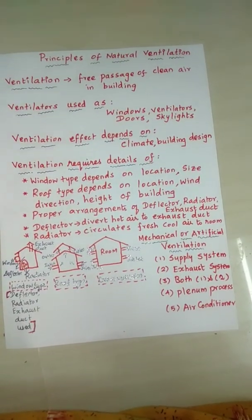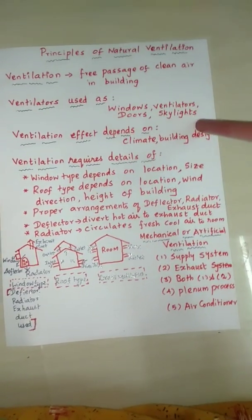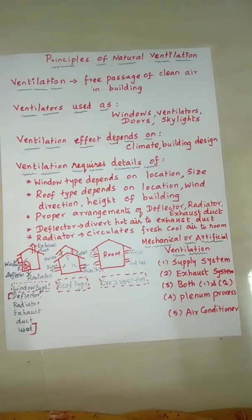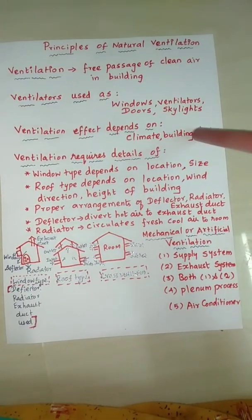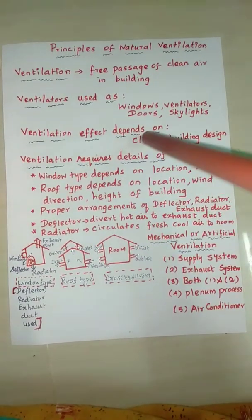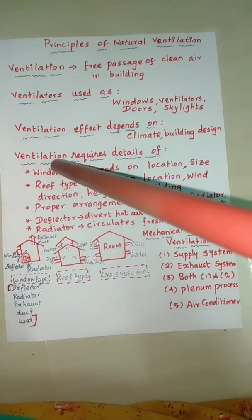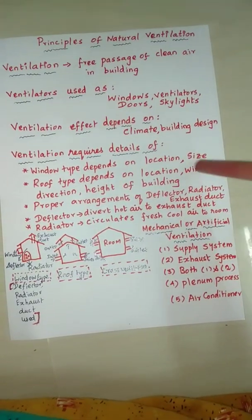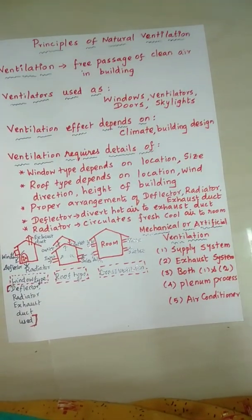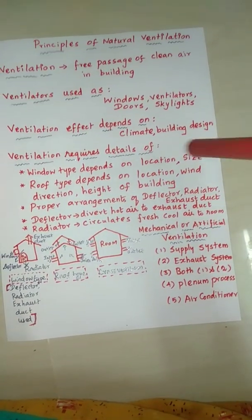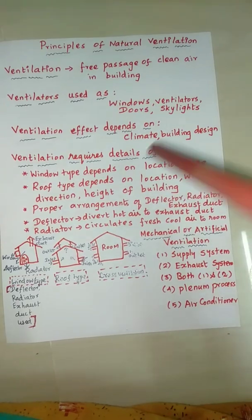To summarize: ventilation at the top of the building depends on control — it can be a free or opening type, or skylights. Ventilation effects depend on the free air passage, the design of the building, and details such as window mount, size, roof type, ceiling inside and outside the building, building location, wind direction, height, and proper arrangements of deflectors.